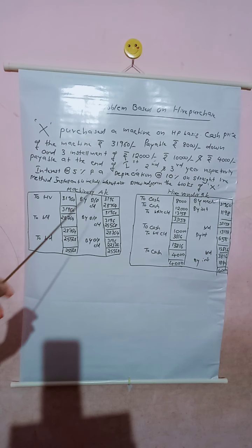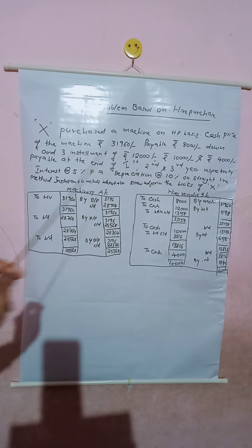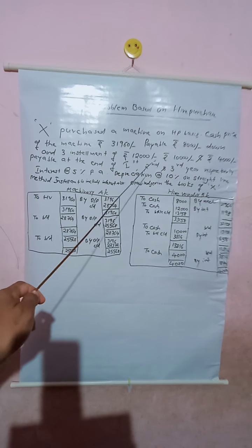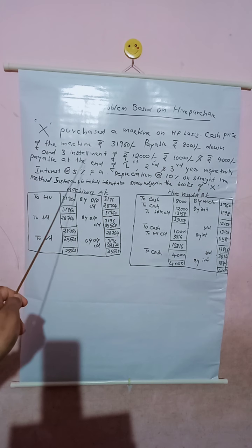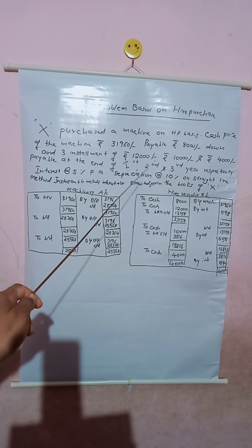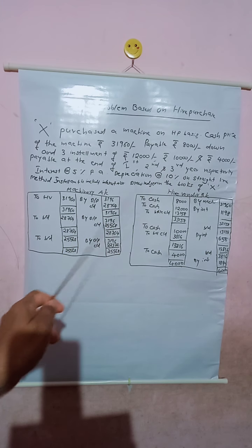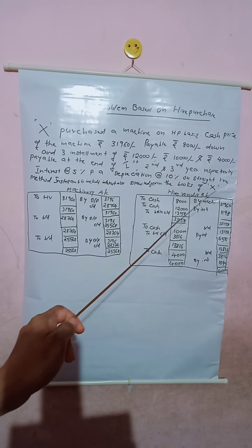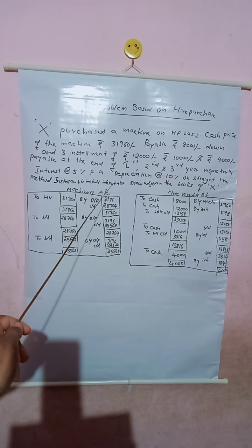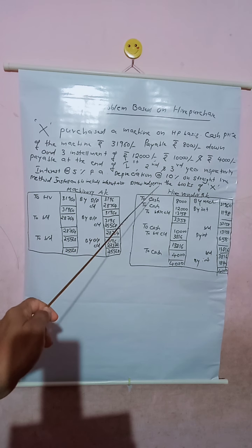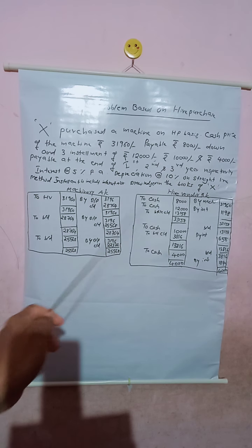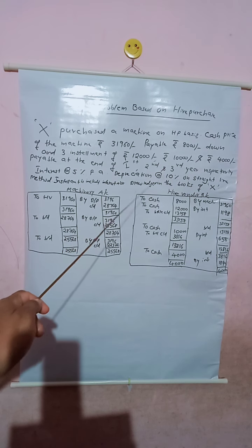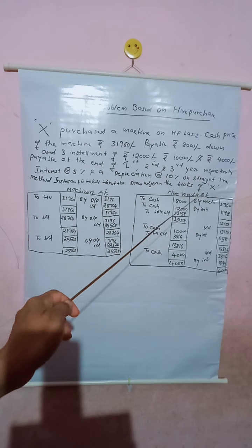X purchased a machine on hire purchase basis. Cash price of the machine is Rs. 31,960. Payable Rs. 8,000 down, and three installments of Rs. 12,000, Rs. 10,000, and Rs. 4,000 payable at the end of first, second, and third year respectively. Interest at the rate of 5% per annum. Depreciation 10% on straight line method. The installment amount is inclusive of interest. Draw ledger accounts in the books of X.